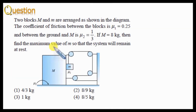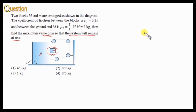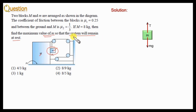In this question, we need to find the maximum value of small m — that means the maximum value of this hanging mass — so that the system will remain at rest. First of all, let us make the free body diagrams. The system has no motion in the vertical direction as well as in the horizontal direction.